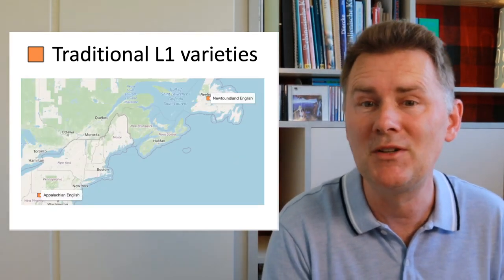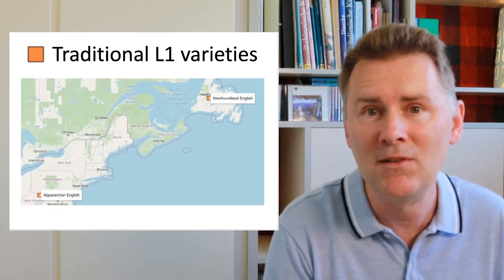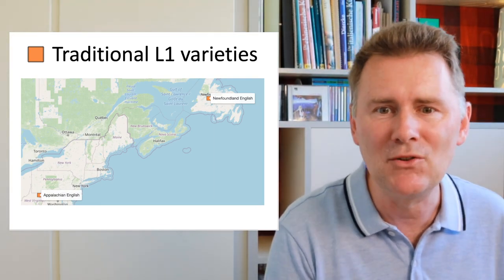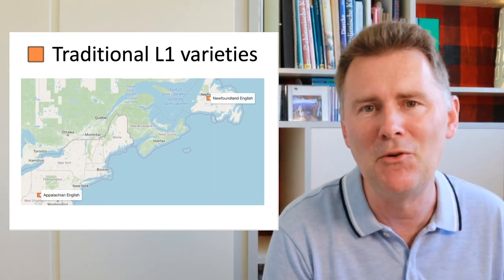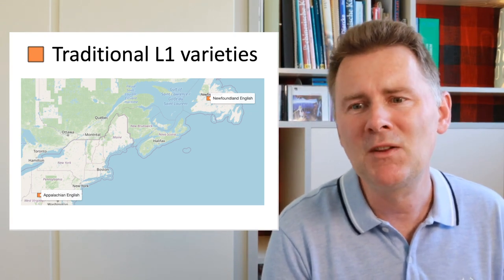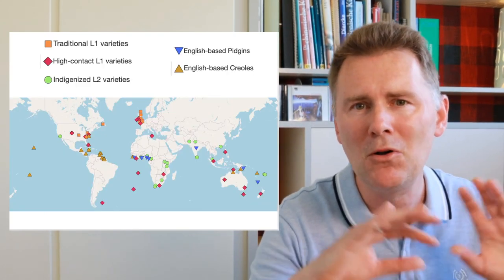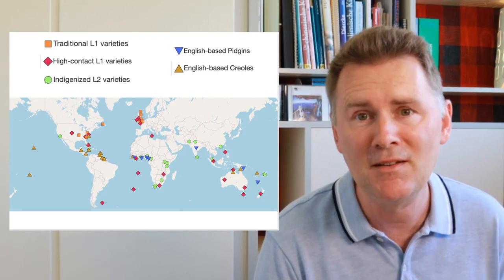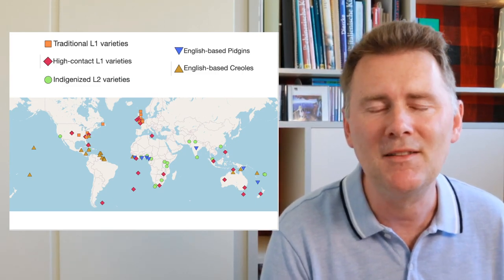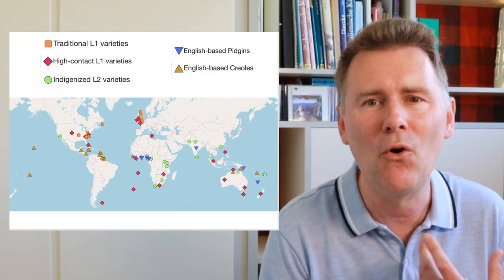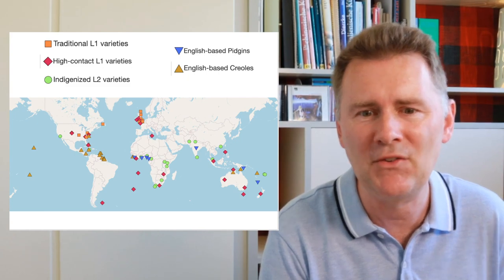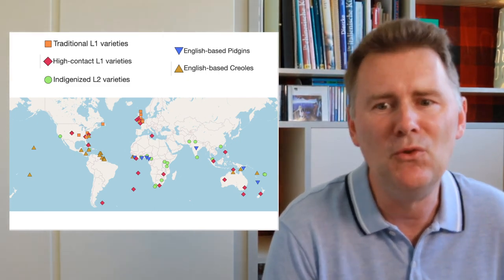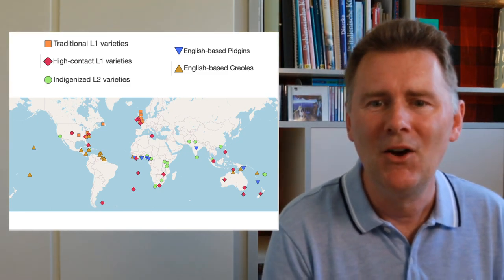There are also traditional L1 varieties outside of Britain — for example, Newfoundland English and Appalachian English in North America. If you look at the full map of all 77 varieties in the E-Wave, the orange squares are mainly on the British Isles with a few North American ones.